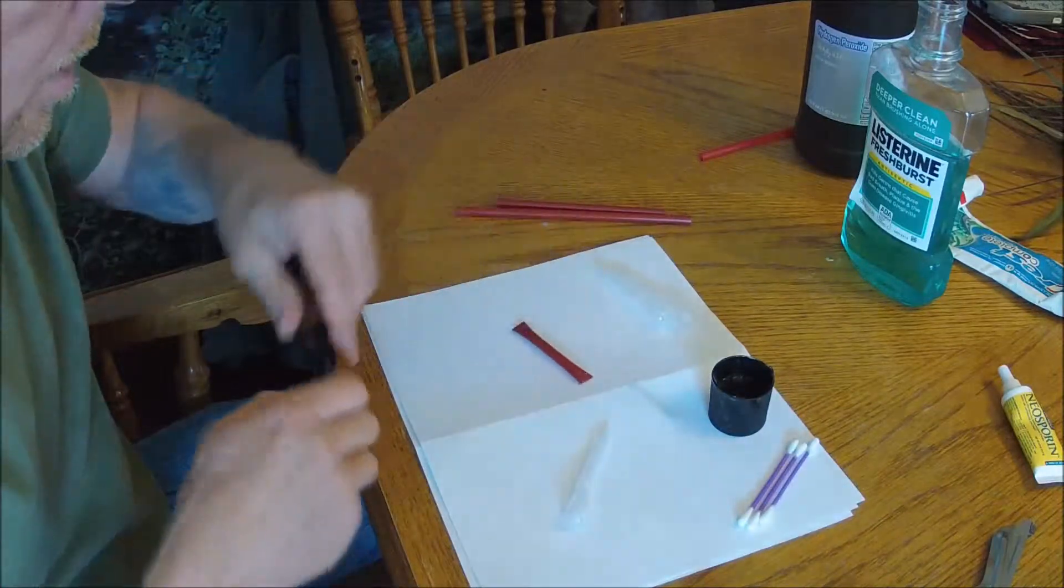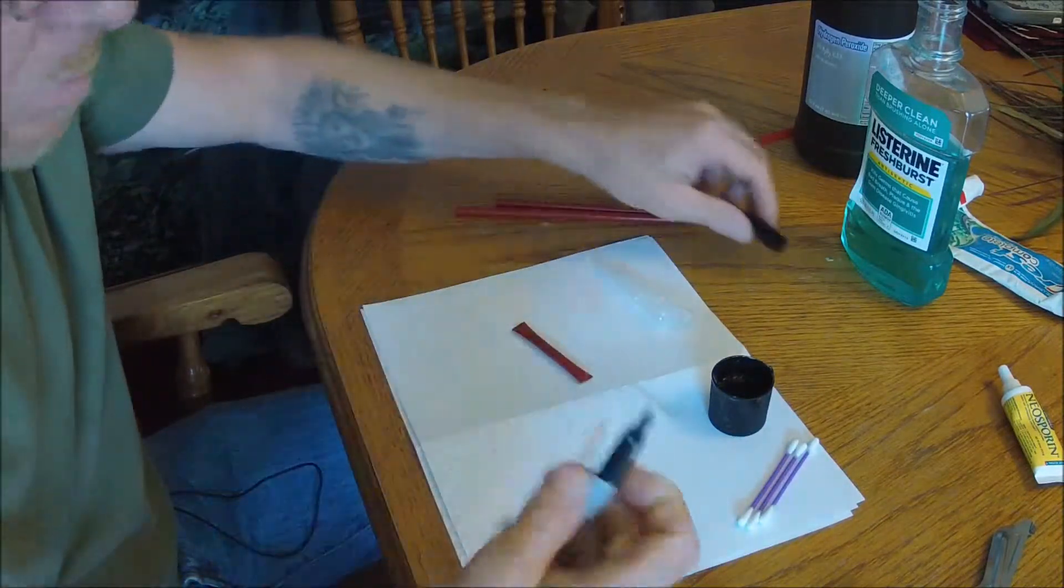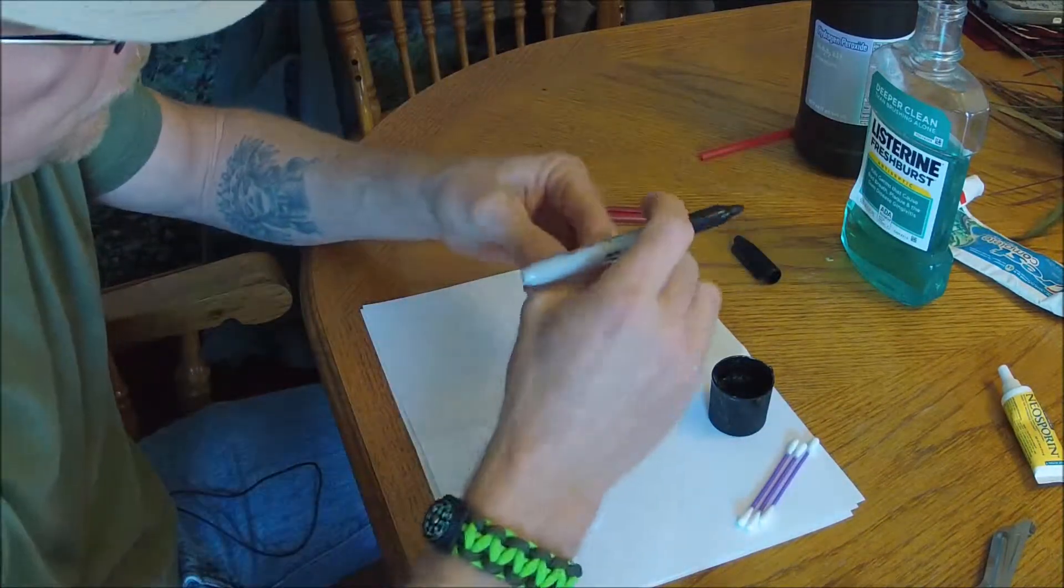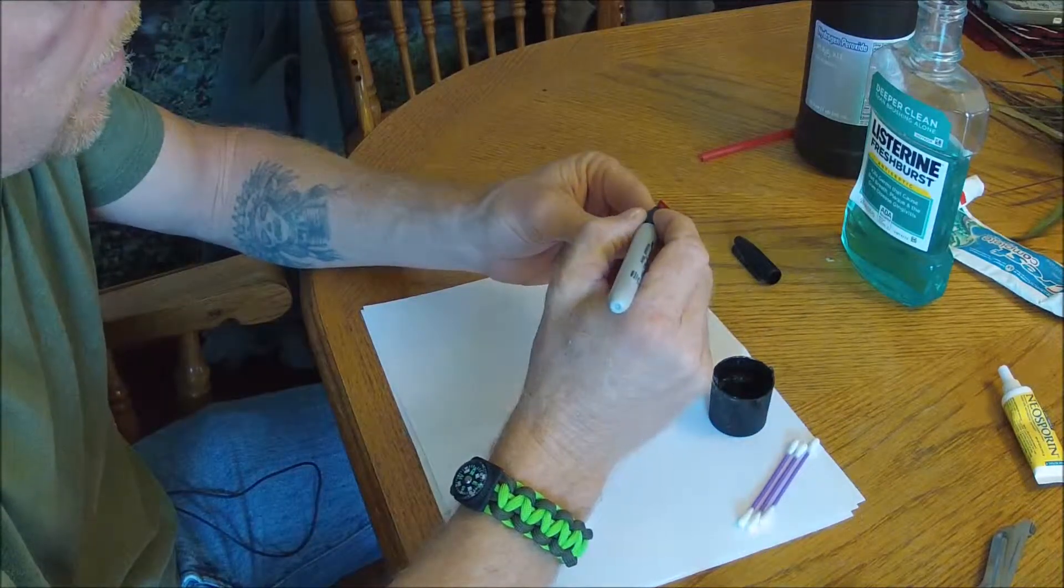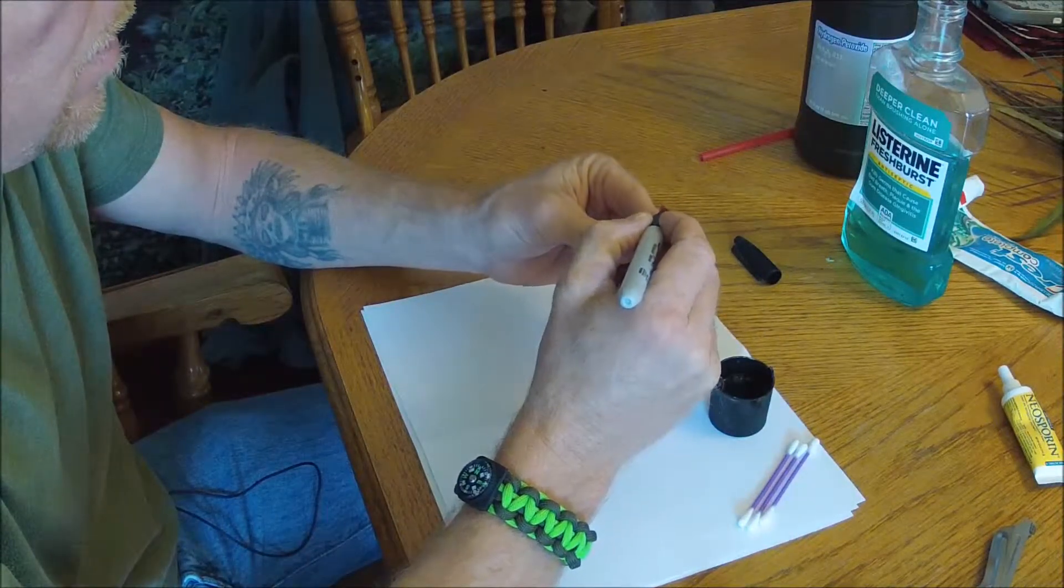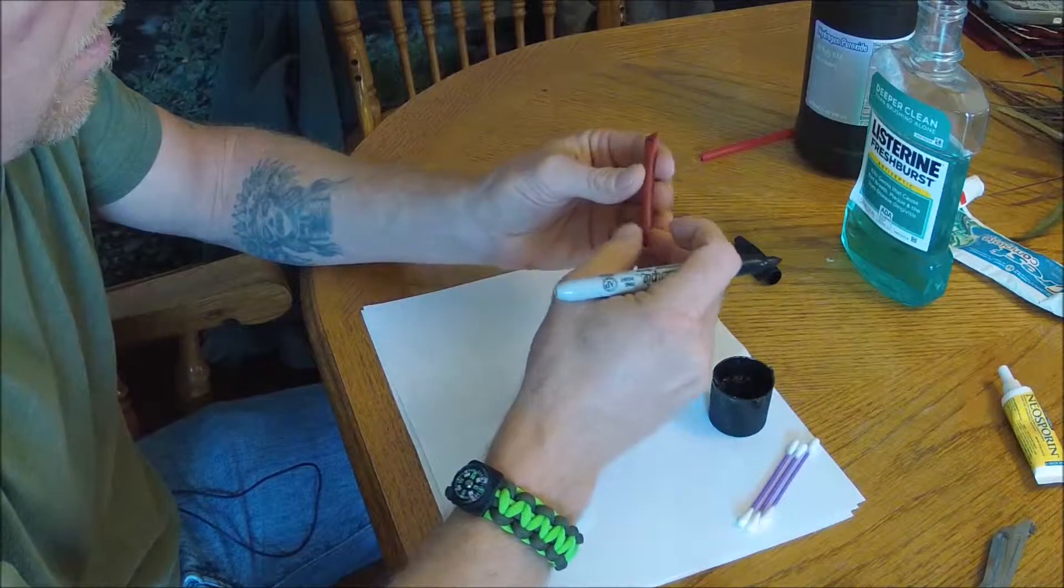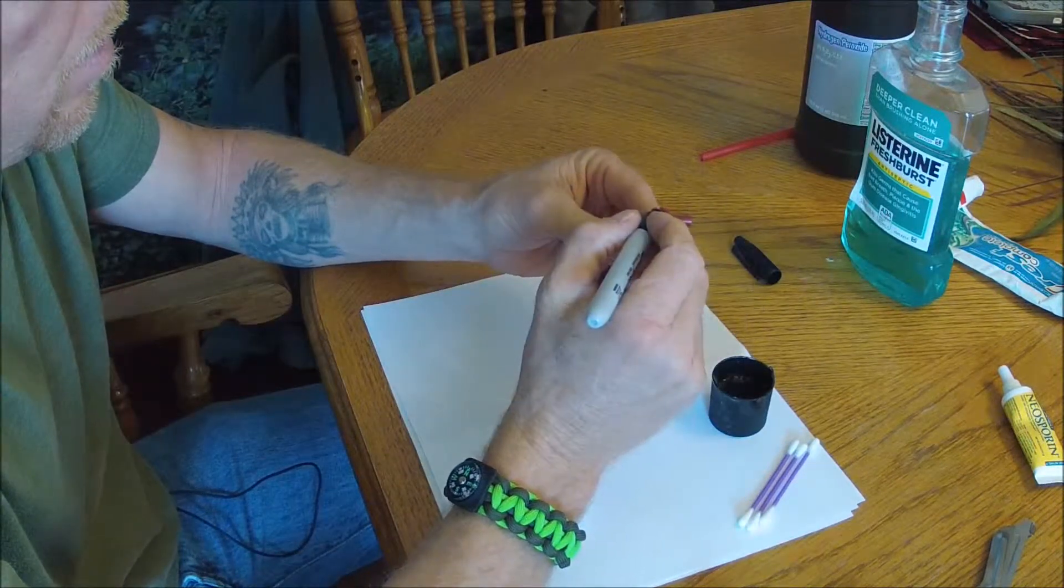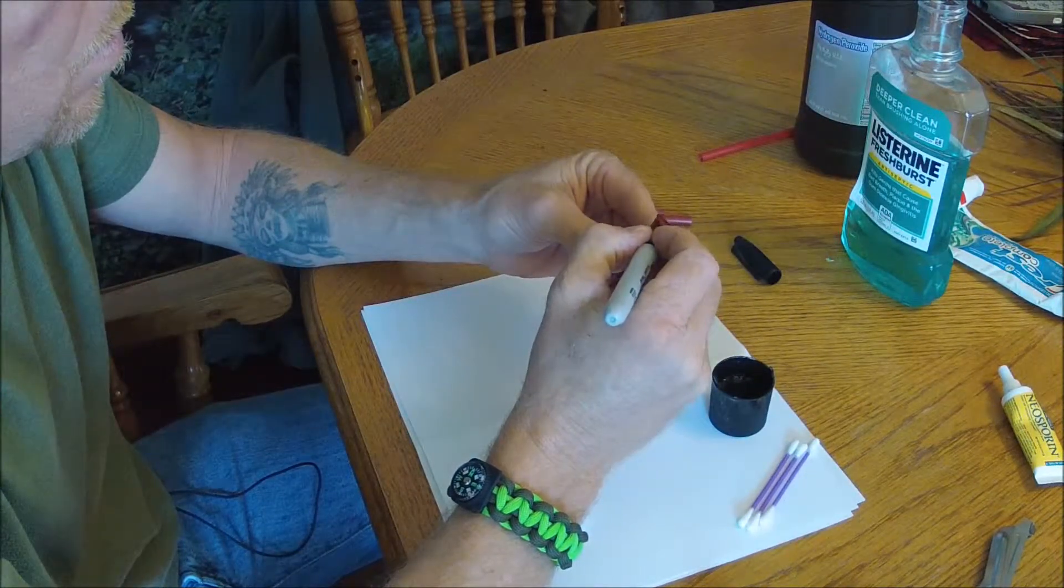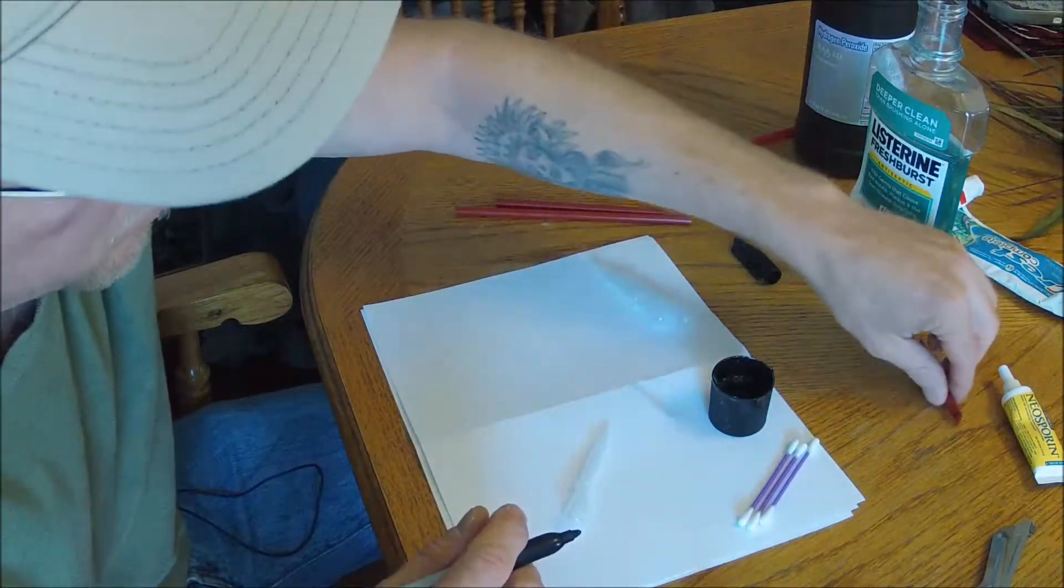Now it's mouthwash. I have a kind of a fat sharpie here so what I do is I write on one flattened end I'll write an M and on the other end I'll write a W. So mouthwash, I know that's mouthwash.